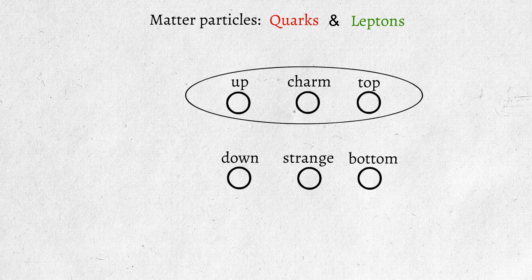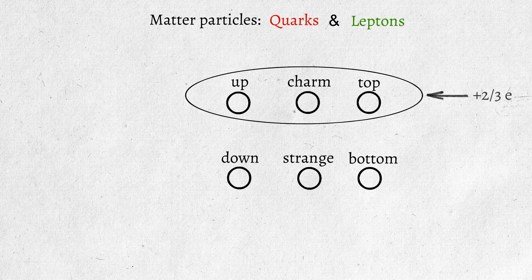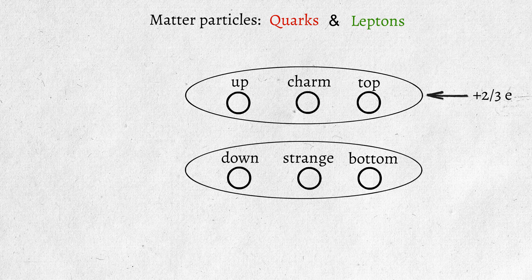The top row shows quarks with an electric charge of plus two-thirds E, where E is the charge of the electron, and the bottom row shows quarks with an electric charge of minus one-third E.